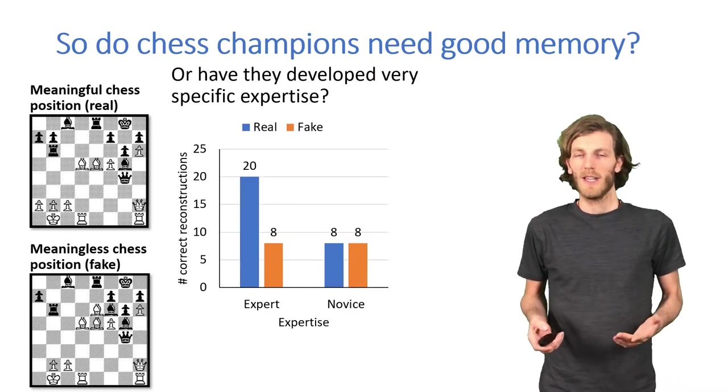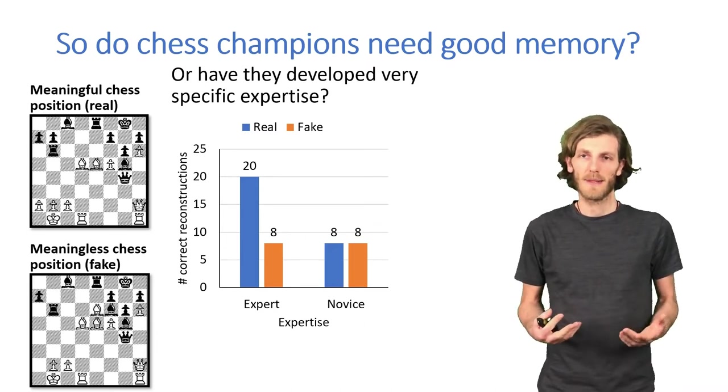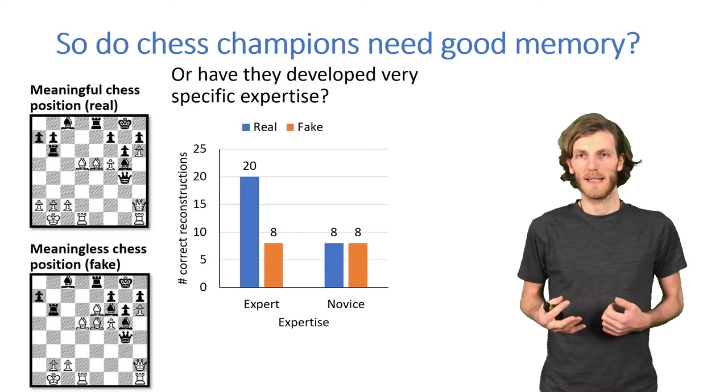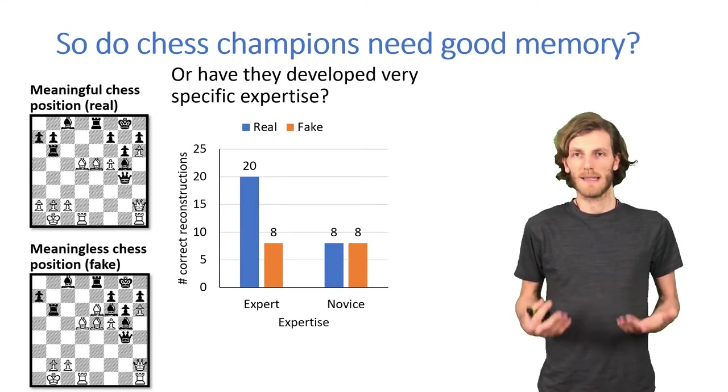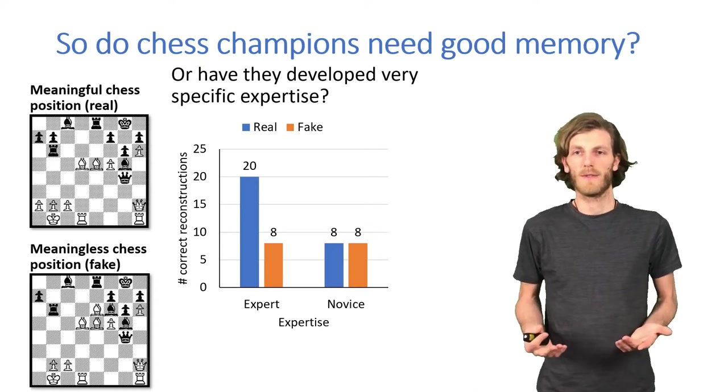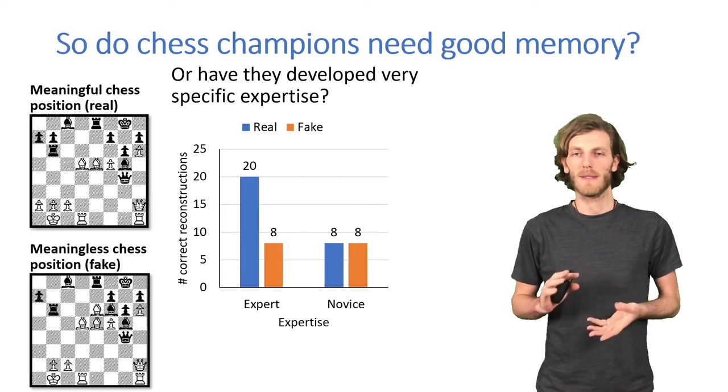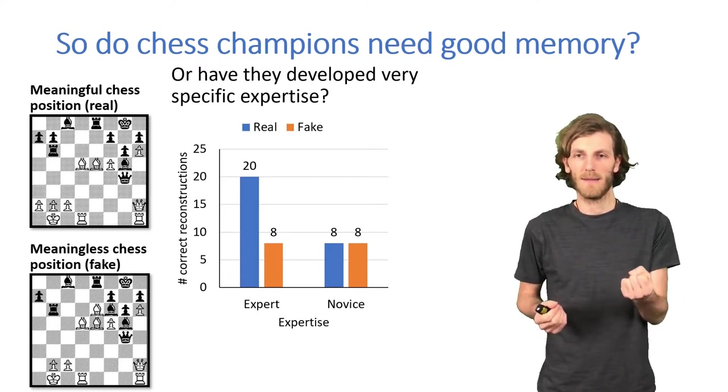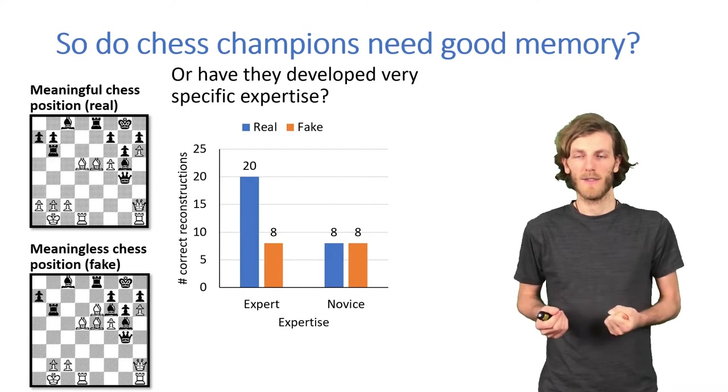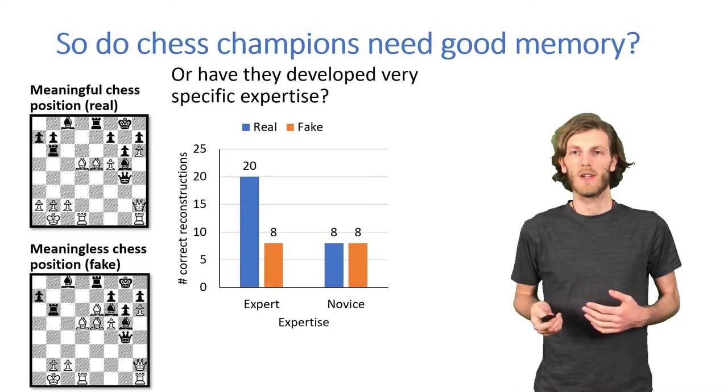And when you do that, you get a very different pattern of results. So, in the real games, we see what we saw before, experts are better than novices. In the fake games, there is no or at least a much smaller performance difference. So, it seems to me that those two variables interact. The variable of whether the participant is an expert or a novice chess player, and the variable whether the chess configuration is real or not.